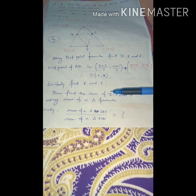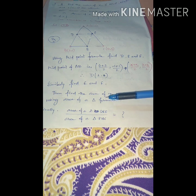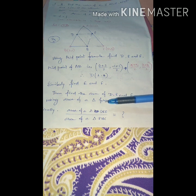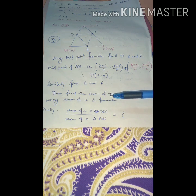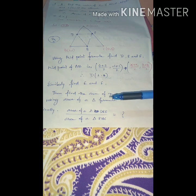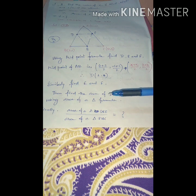In the coordinate geometry chapter, the three main topics are distance formula, section formula, and area of a triangle — and we have now covered all three. Your homework is to complete exercises 7.1, 7.2, and 7.3 in your homework copy. Some extra questions are also shared through BDF; complete those in both your classwork copy and homework copy. Exercise questions must be in the homework copy.